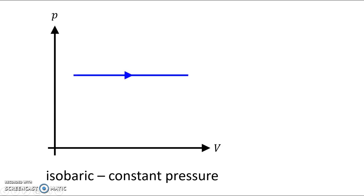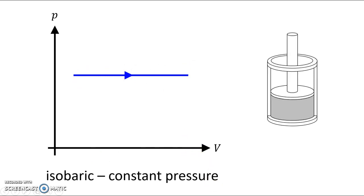This is an isobaric expansion. It's isobaric because the pressure doesn't rise or decrease. It's an expansion because the volume, the x-axis, gets bigger. Here's what that looks like. You heat your gas, and this piston will raise up, but you keep the pressure constant.